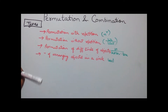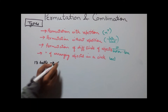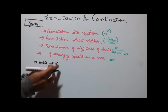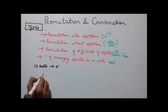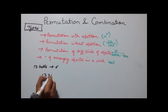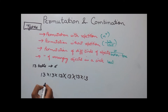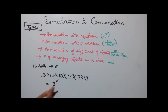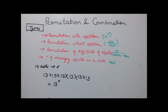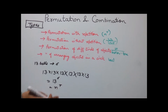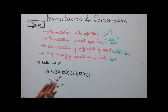Permutation with repetition: suppose there are 13 balls and one needs to pick up any 6 balls. Because this is with repetition, we pick a ball and then put it back. So our chances of picking a ball every time remains 13, giving us 13 × 13 × 13 × 13 × 13 × 13, or 13 to the power 6. Here 13 is the total number of balls and 6 represents the balls we are picking, which gives us the formula n to the power r, where n is the total number of objects and r is the number of objects being picked.